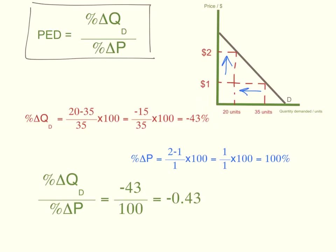The minus means that the quantity demanded decreased — the negative means that there has been a decrease. For the percentage change in price, you would get new minus old divided by old: 2, which is the new price, minus 1, which is the old price, divided by 1, which is the old price, times 100. This gives you positive 100%, meaning that price rose. Now let's divide the percentage change in quantity by the percentage change in price: negative 43 divided by 100 gives you negative 0.43.